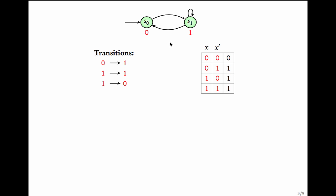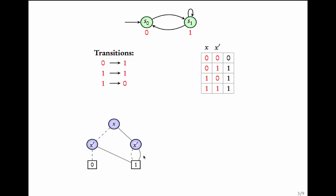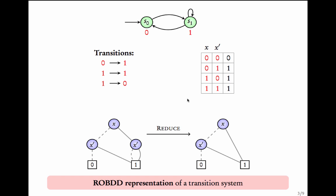Since there are two states, the states are 0 and 1 and the transitions are given by this truth table, which contains the entire information about the transition system. Now once we see a transition system as a boolean function, we can represent it using an OBDD. Starting with x: 0 0 goes to 0, 0 1 goes to 1, 1 0 goes to 1, and 1 1 goes to 1. You can see that this is not reduced, so once you reduce it you get this ROBDD, which is a representation of the transition system.